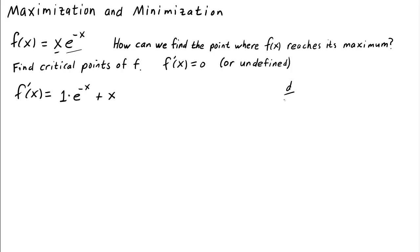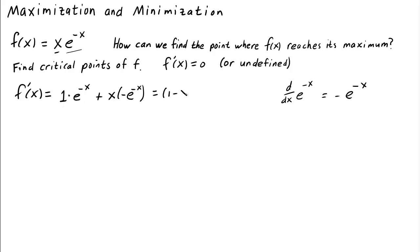Do you remember how to differentiate e to the negative x? The derivative of e to the negative x is minus 1 times e to the negative x. So we multiply by negative e to the negative x. Therefore, f prime of x, factoring out, is 1 minus x times e to the negative x.